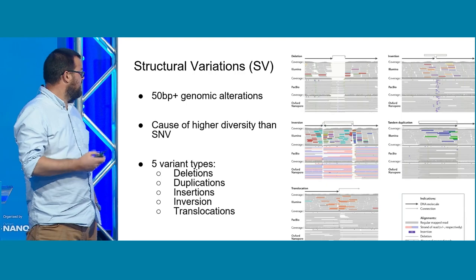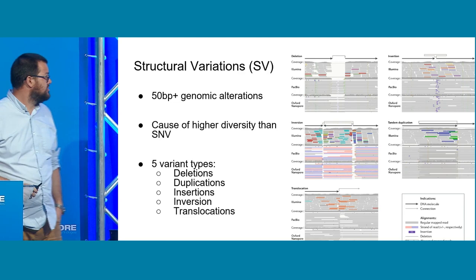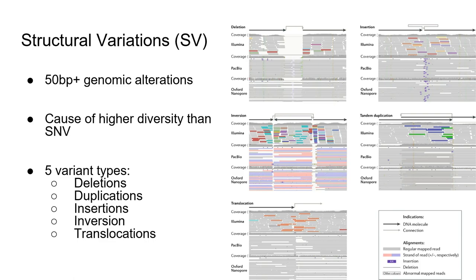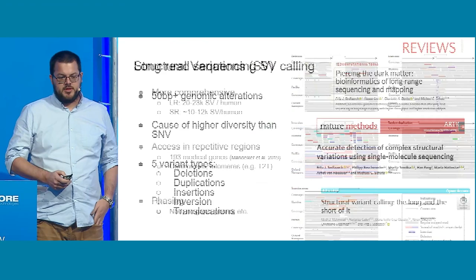As we have heard a couple of times already through yesterday and today's talks, my talk is mainly focused on structural variants and how we can detect these. We are roughly speaking about 50 base pairs and larger events following five different categories: insertions, deletions, duplications, inversions, and translocations. The fascinating part is that despite the number of structural variants being much fewer than SNVs, the overall impact and diversity in terms of base pairs is much higher.